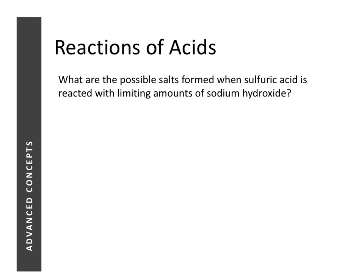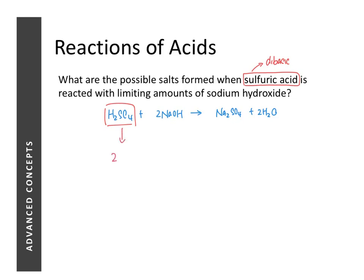Now in this question: what are the possible salts formed when sulfuric acid is reacted with limiting amounts of sodium hydroxide? It seems like a straightforward question, because we have learned that when sulfuric acid reacts with sodium hydroxide, the salt formed is simply sodium sulfate and water. However, the concept here is that sulfuric acid is a dibasic acid, and one unit of the acid will produce two units of hydrogen ions.